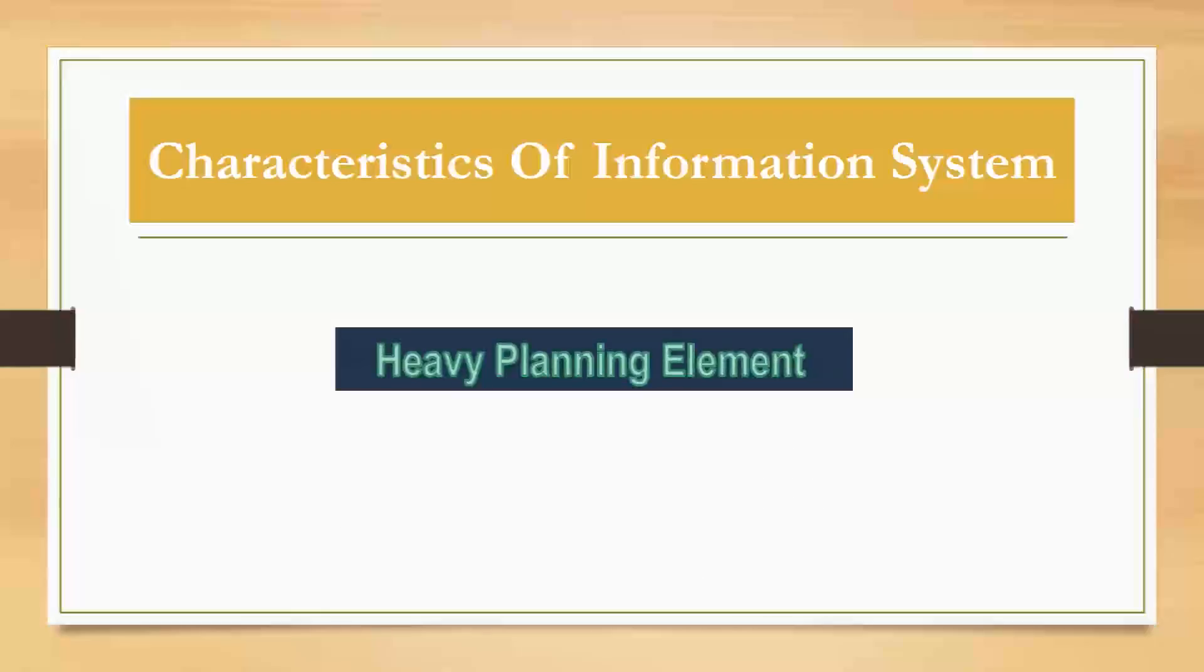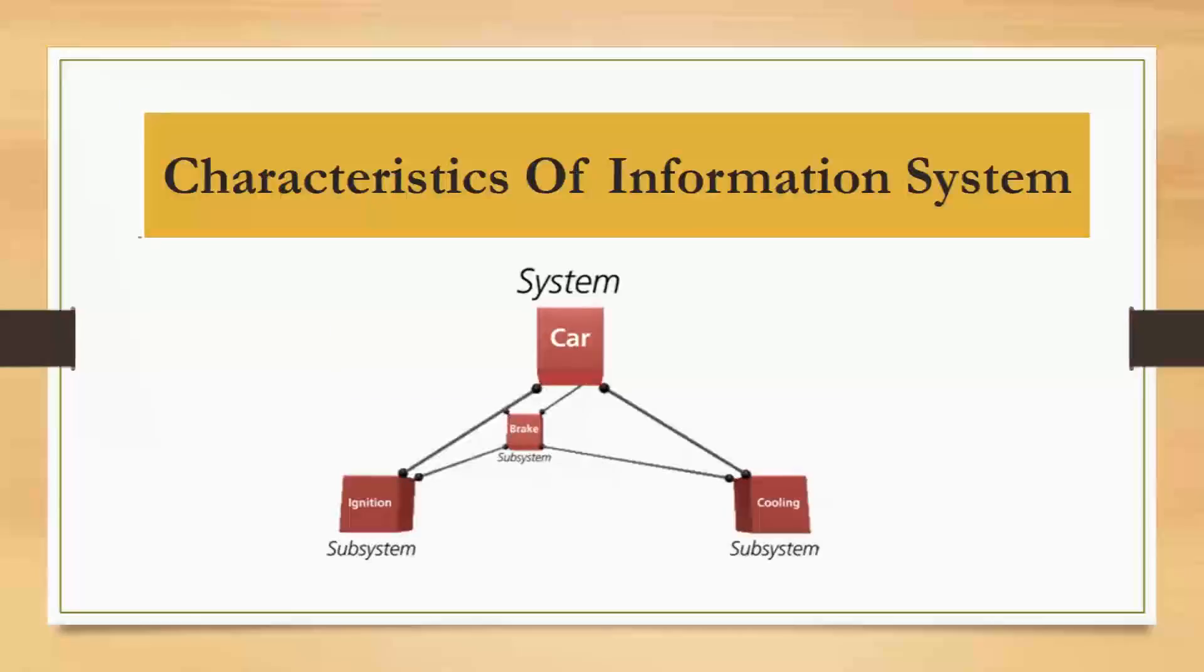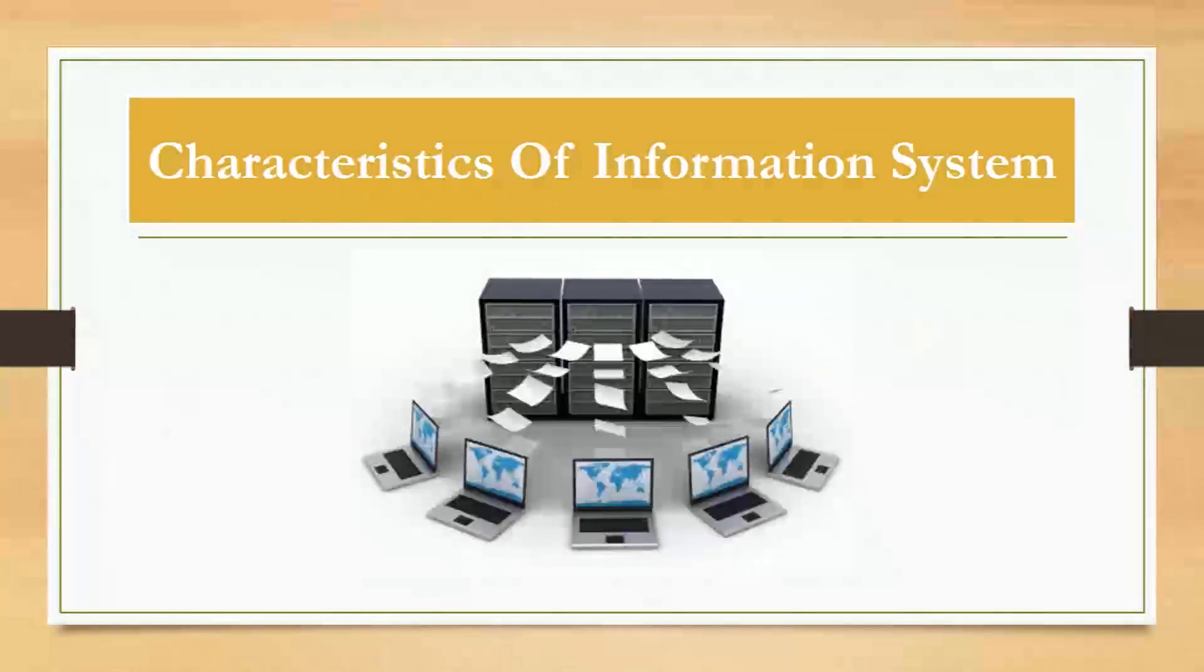Next is heavy planning elements. Information systems don't come overnight; it takes 3 to 5 years to develop. Next is subsystem concept, meaning the number of departments are equal to subsystems in an information system. Next is flexibility and ease of use, meaning it is easily modified for the future and easy to use.